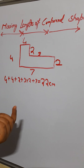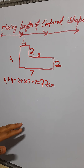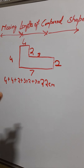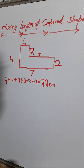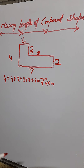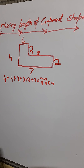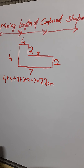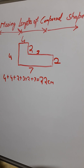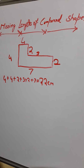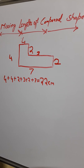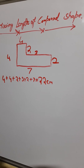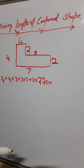So the perimeter is twenty-two centimeters — we use centimeters, not centimeters squared, because centimeters squared is the unit for area. Now we have to find the area, which might look a little difficult because this is a compound shape, not a simple quadrilateral.